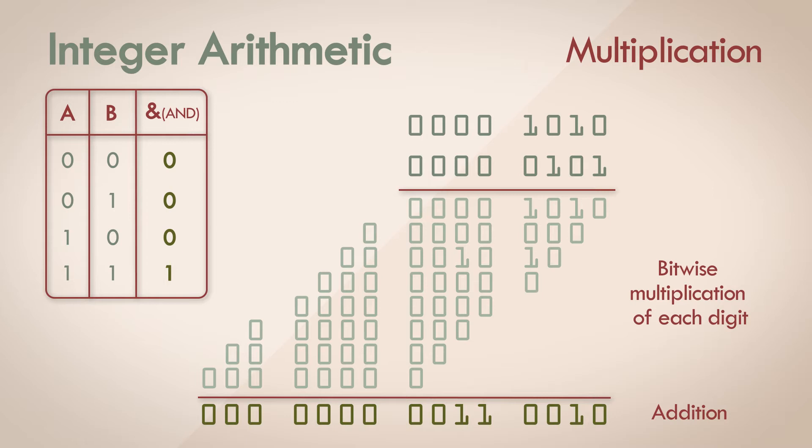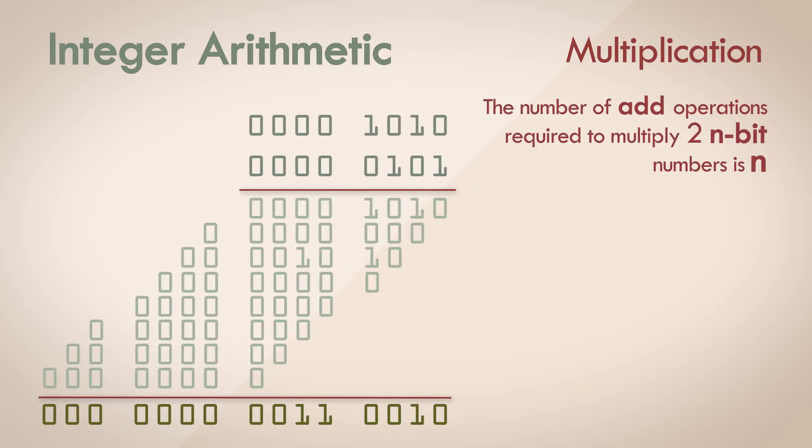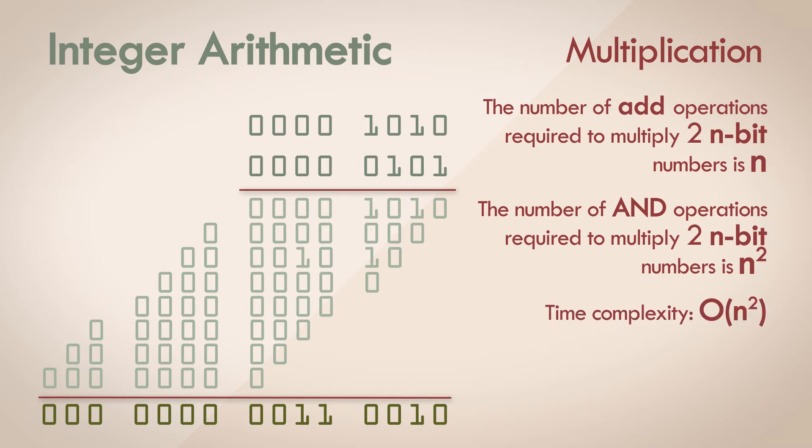There are a few observations that we can make here. The number of add operations required to multiply two n-bit numbers is n. And then there's the logical AND operation required to generate the partial sums in the first place. The individual operations may be trivial, but the time complexity for multiplication operations to finish is big O n squared.